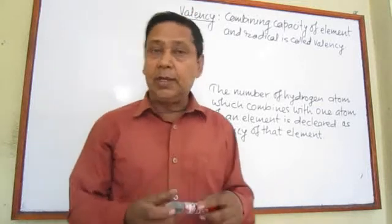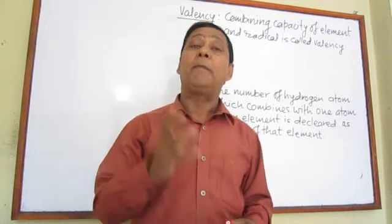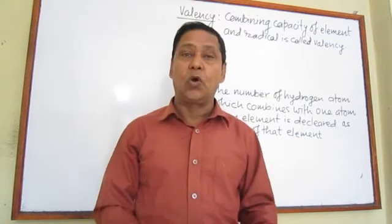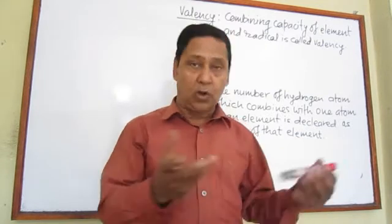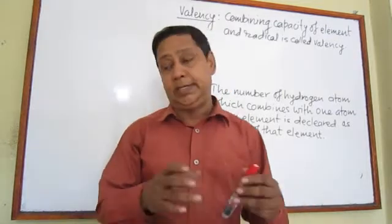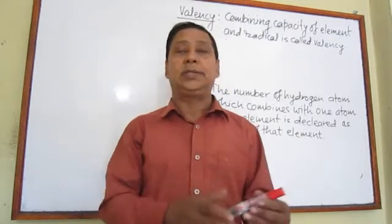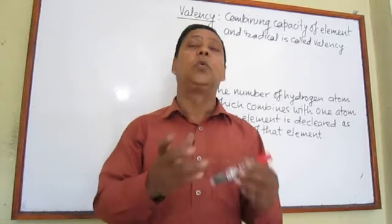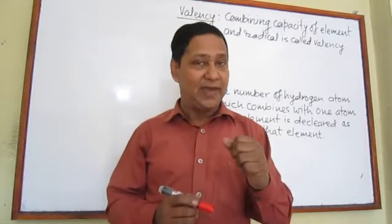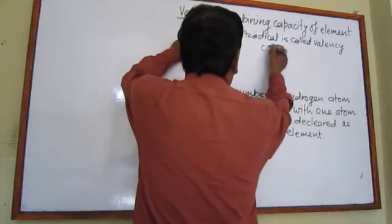Let's talk about balance. What is it? The combining capacity of an element or radical is called the valency of that element or radical. To understand this more clearly, let's explore how valency is declared, how it is designed, and how we use it in chemical reactions.